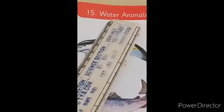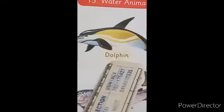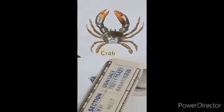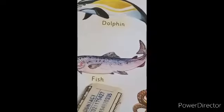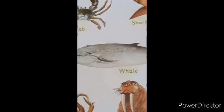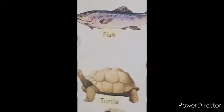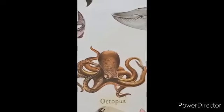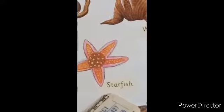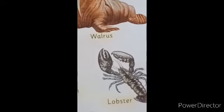Water animals, makla pani ke januar. Dolphin. Crab. Fish. Seal. Turtle. Octopus. Walrus. Starfish. Lobster. Snail.